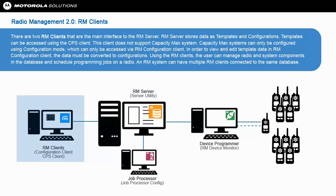There are two RM clients that are the main interface to the RM server. RM server stores data as templates and configurations. Templates can be accessed using the CPS client, however this client does not support Capacity Max systems. Capacity Max systems can only be configured using Configuration Mode, which can only be accessed via RM Configuration Client. In order to view and edit template data in RM Configuration Client, the data must be converted to configurations.